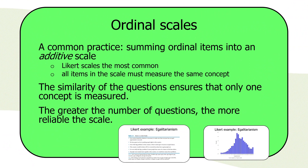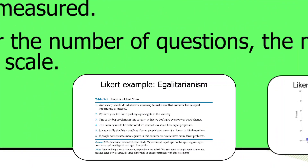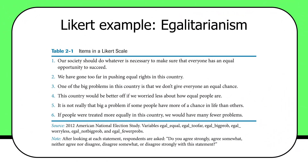Here's a very good example. This is a scale that's been asked in the American National Election Study — a battery of questions. This is a measure — scale items in a measure of egalitarian beliefs, or egalitarianism.